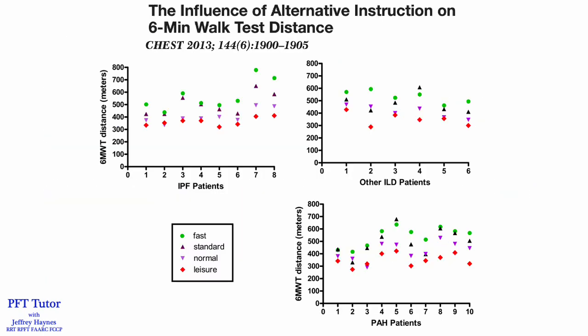A study published in CHEST evaluated the impact of instructions on the 6-minute walk distance in patients with IPF, other forms of interstitial lung disease, and pulmonary hypertension. Standard instructions produced a larger 6-minute walk distance than when patients were told to walk leisurely or normally. However, when the phrase 'walk as fast as you can' was used, the 6-minute walk distance was higher compared to the standard instructions.